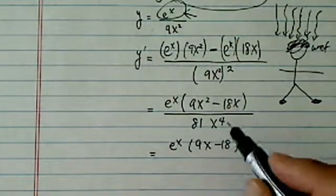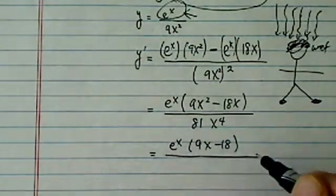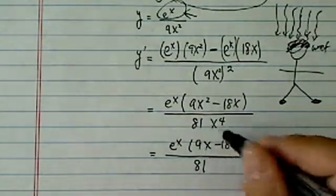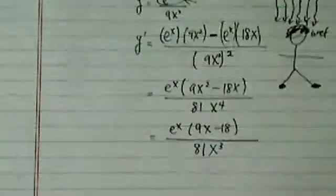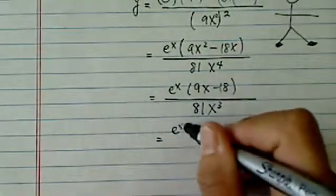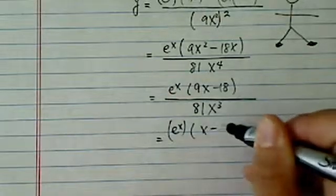19, which is 9x minus 18. That's 81. I think I see a 3 there also. Well, maybe one more step. Okay. So we're going to take 9 out. So e to the x, x minus 2.